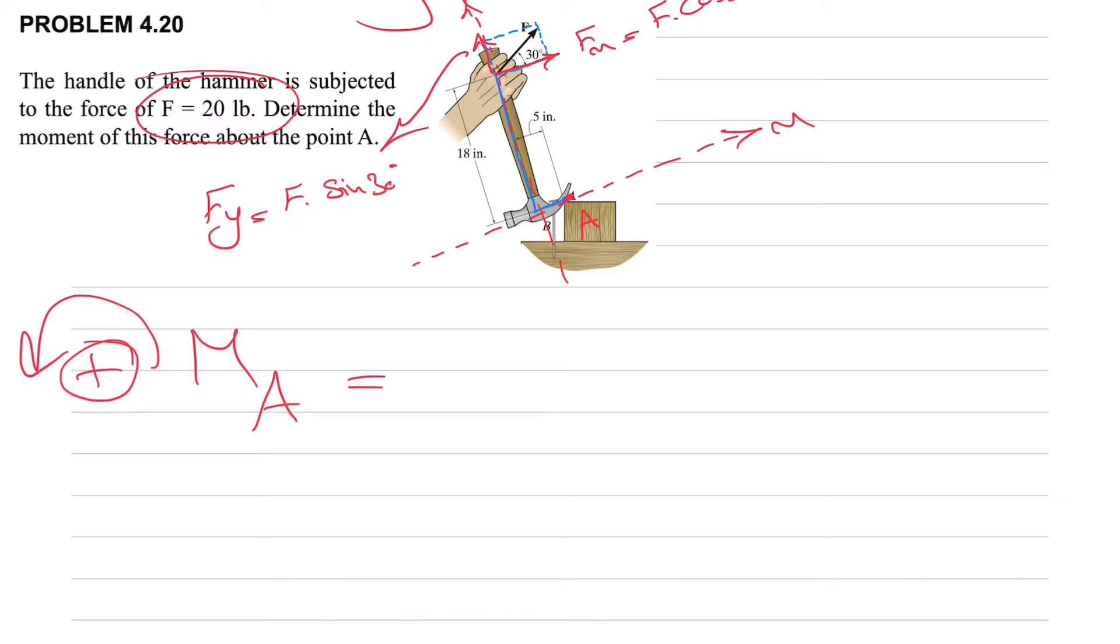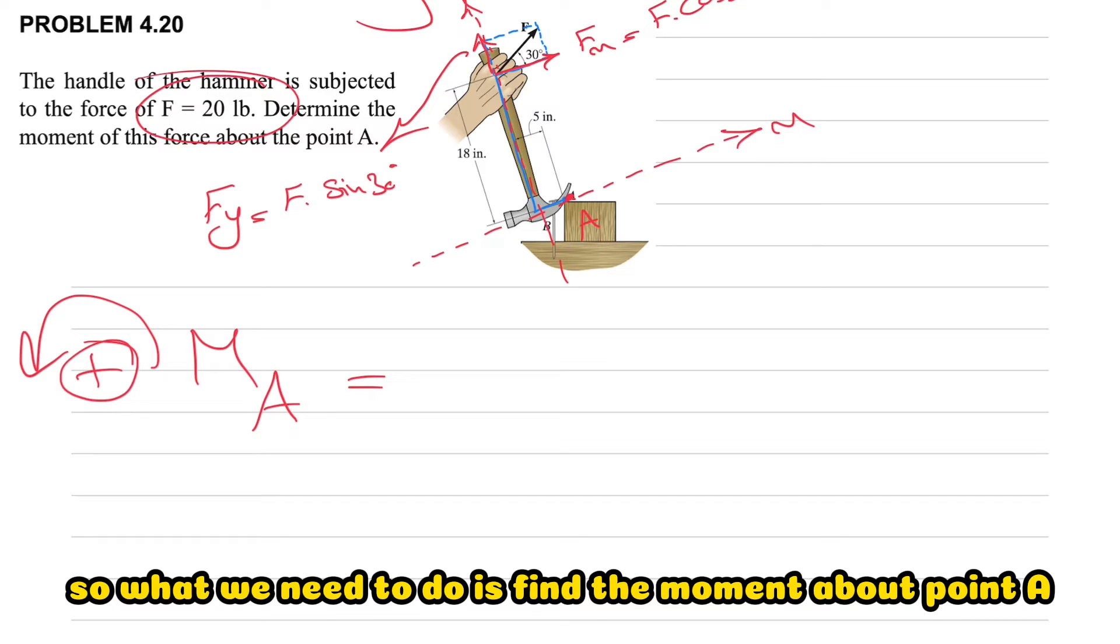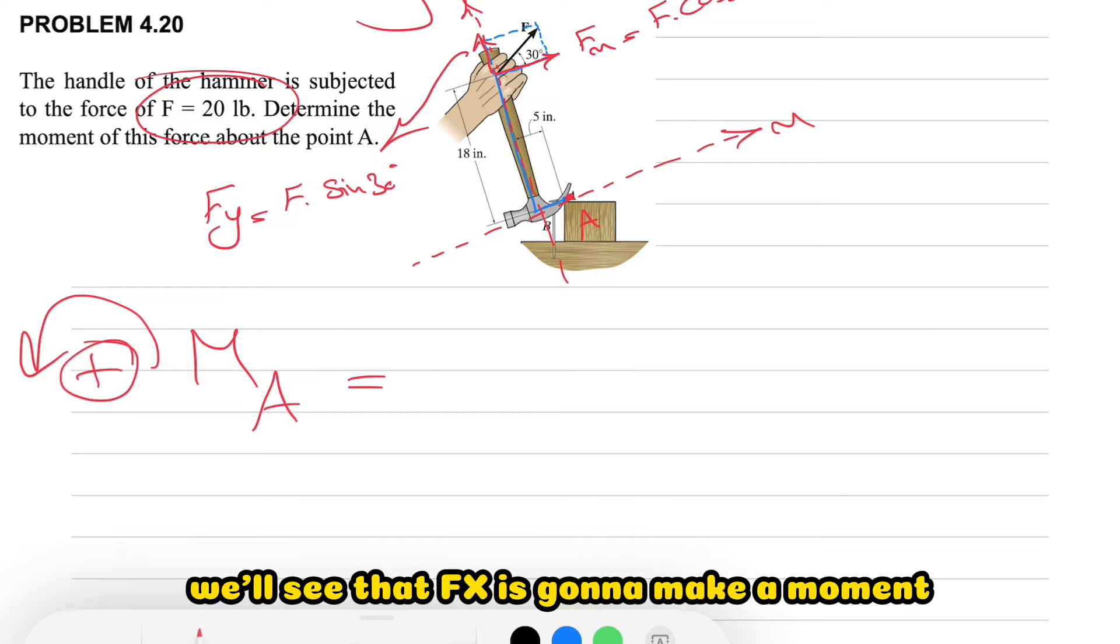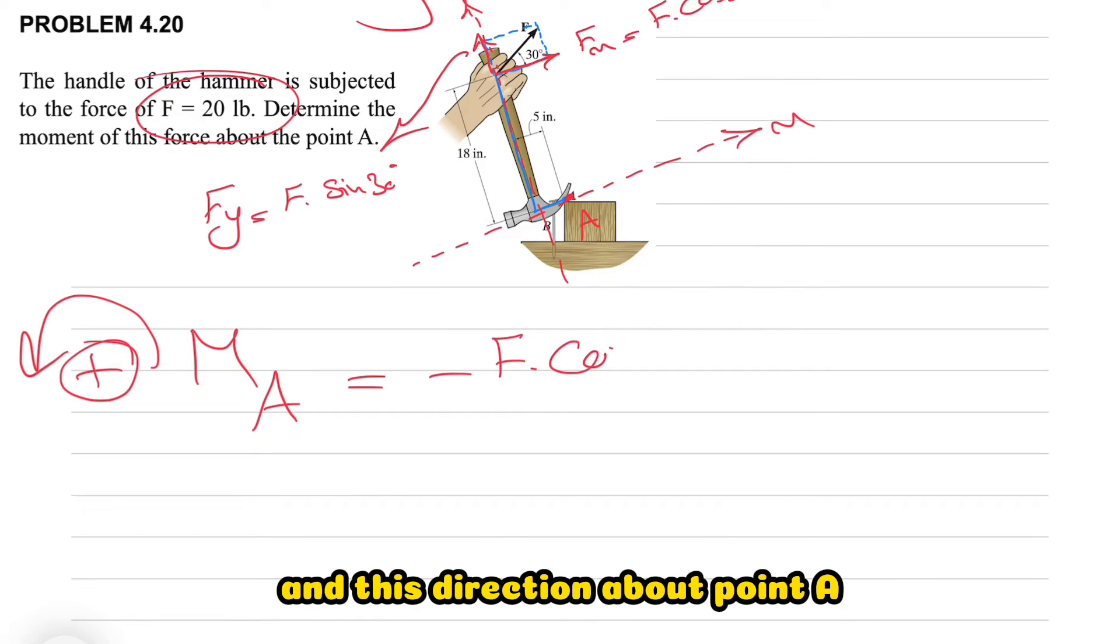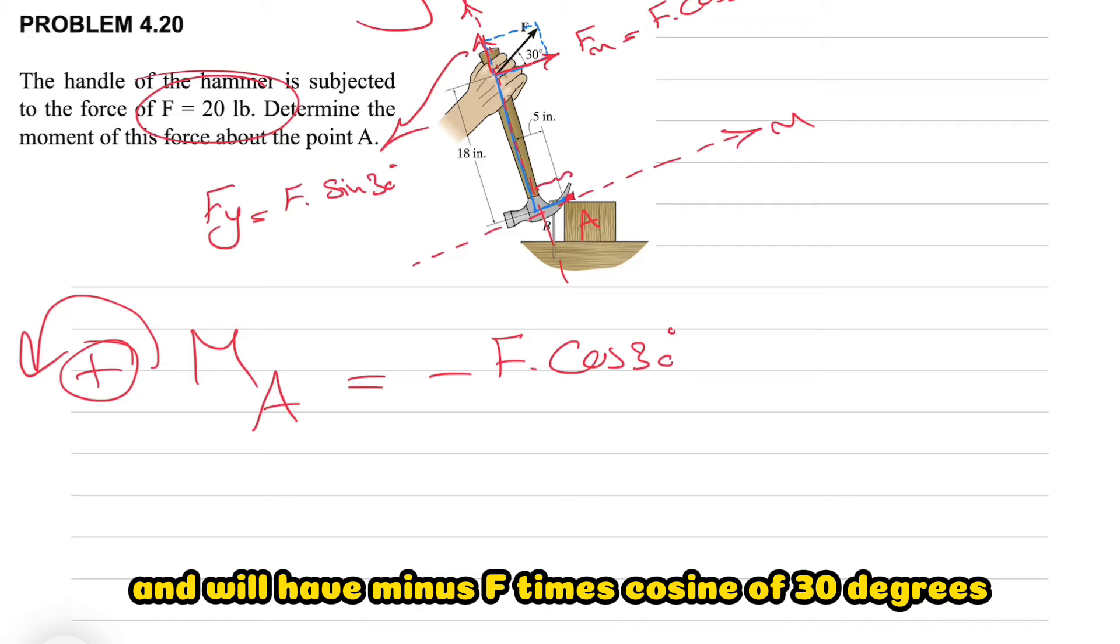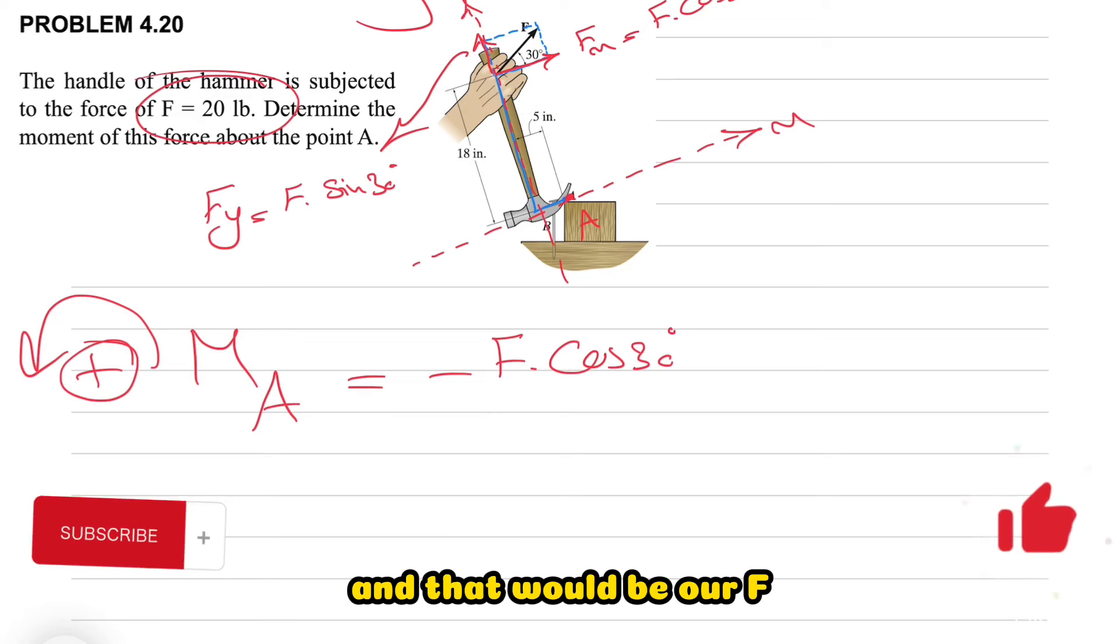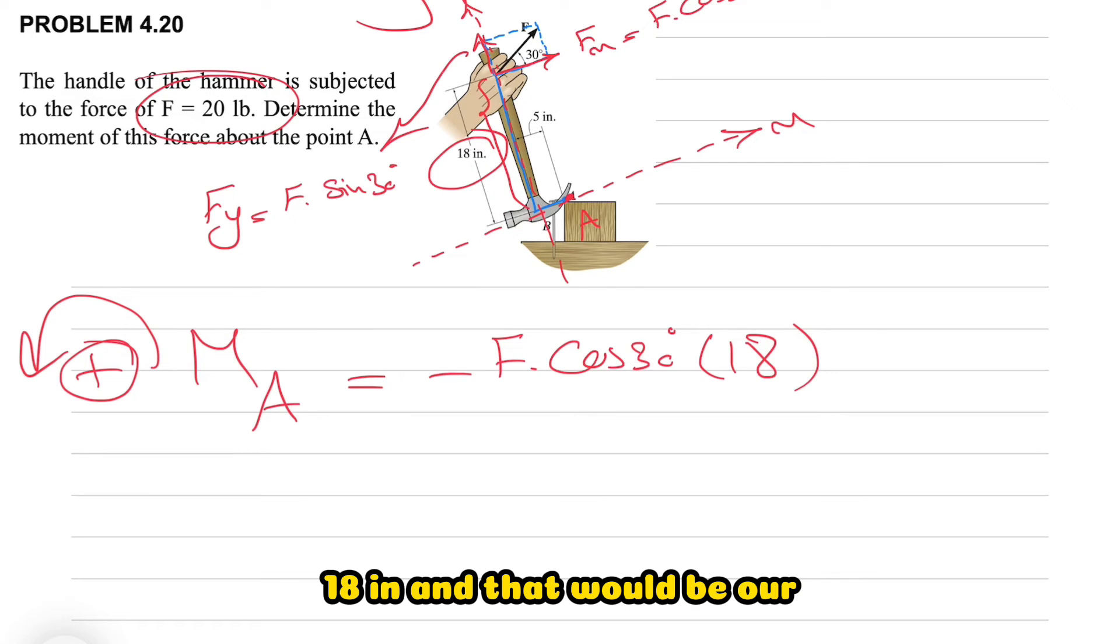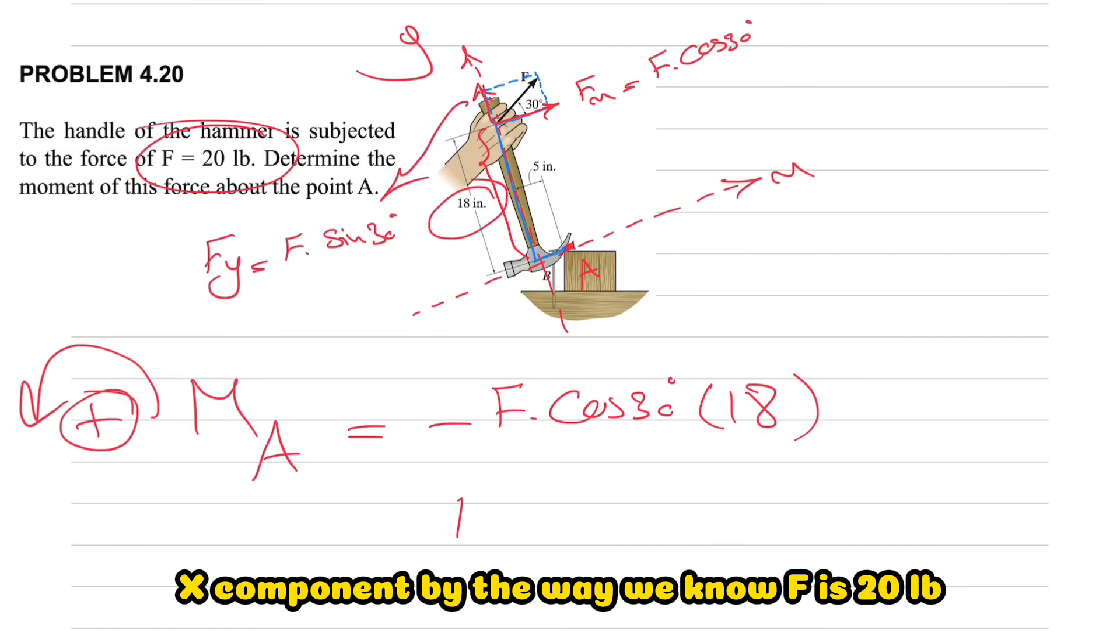So what we need to do is find the moment about point A. Let's start with the moment of FX. If we look at here we'll see that FX is going to make a moment in this direction about point A which is clockwise, therefore we have a negative moment for FX. And we'll have minus F times cosine of 30 degrees, and that would be our F, and our R would be the distance that we have from here to here which is 18. And that would be our X component. By the way we know F is 20 pounds.